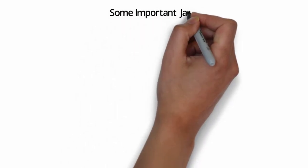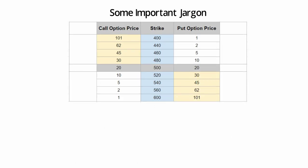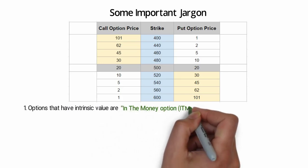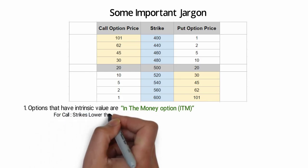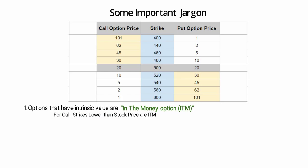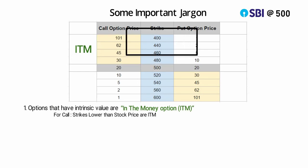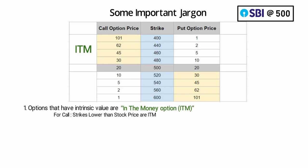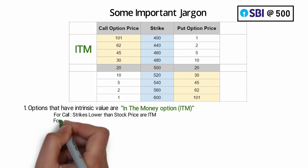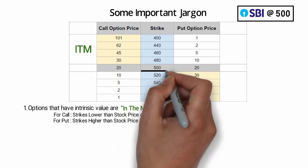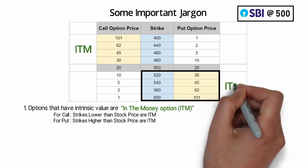Now is a good time to introduce some jargons. Number one: options that have intrinsic value are called in-the-money options, or ITM. For call options, these are the strikes lower than the current stock price. For example, if SBI is trading at 500, the 480, 460, 440 and so on are ITM options, because they are worth something if SBI expires at 500 — they are already making money or in the money. For put options, the strikes that are higher than the current stock price are ITMs. For example, if SBI is trading at 500, the 520, 540, 560 and so on are ITMs.